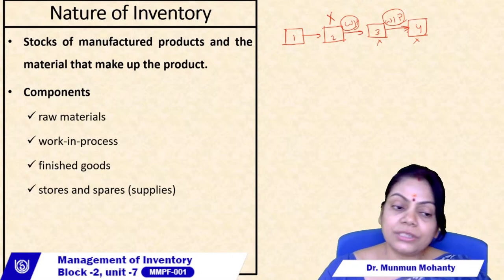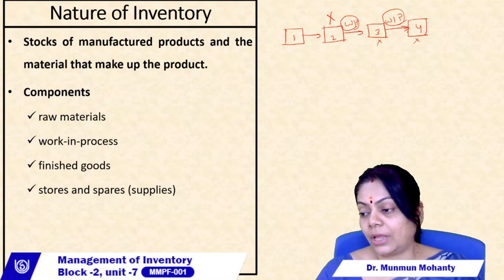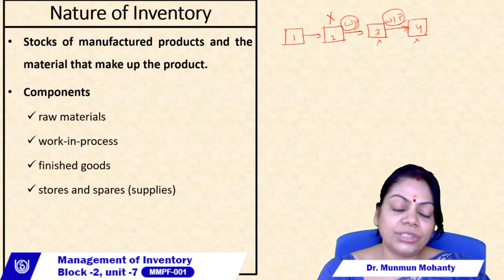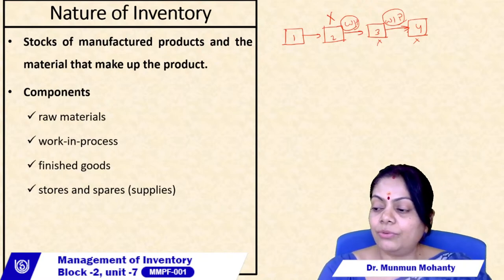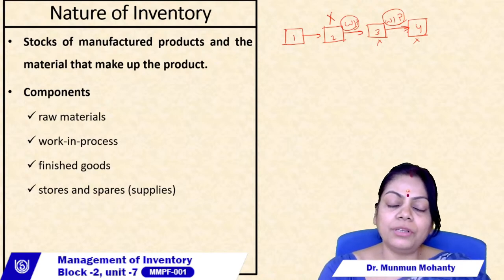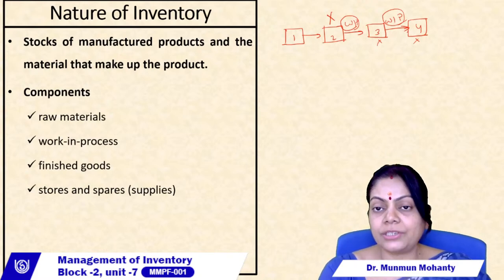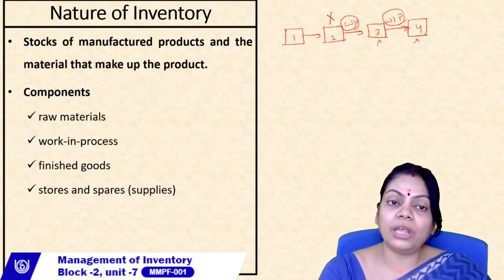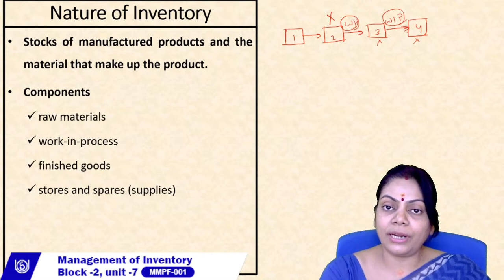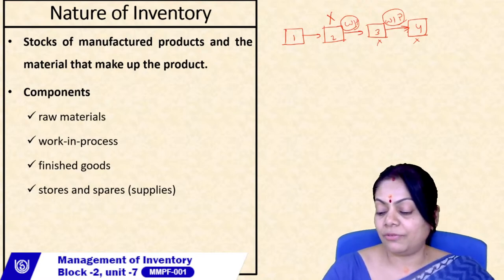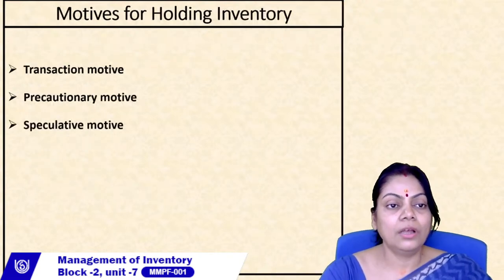Then we have stores and spares — also called purchased components — which are another important input in the manufacturing process. For example, in car assembly, certain hardware items can be procured from outside as stores or spares to cut down assembly time. Though they don't directly enter the production process, they are a very important part of inventory because they speed up the delivery of the finished product.